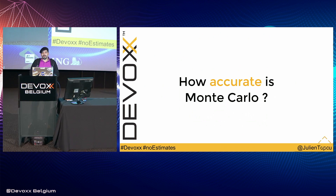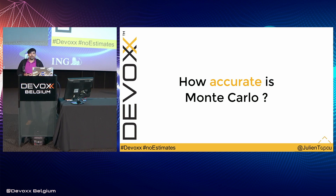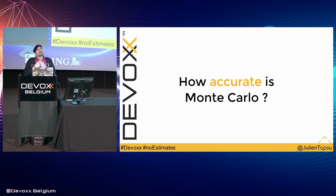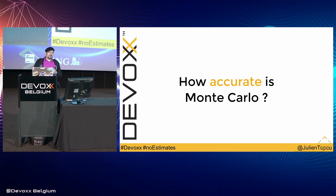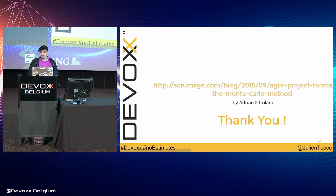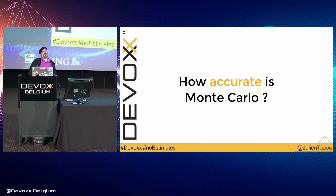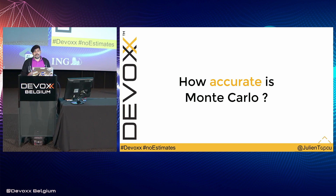Another question: how accurate is Monte Carlo? That's not really the point, because we don't try to know exactly when everything will be released. This is a tool to help you make decisions and start your mutation — the adoption of No Estimates — where you prioritize by value instead of cost. If you're in a phase where everything is really stable, the tool can be very good. For example, in one of my teams, on a three-month project we had an error of two weeks to one month. But when there were a lot of turnovers, we couldn't use the tool effectively.